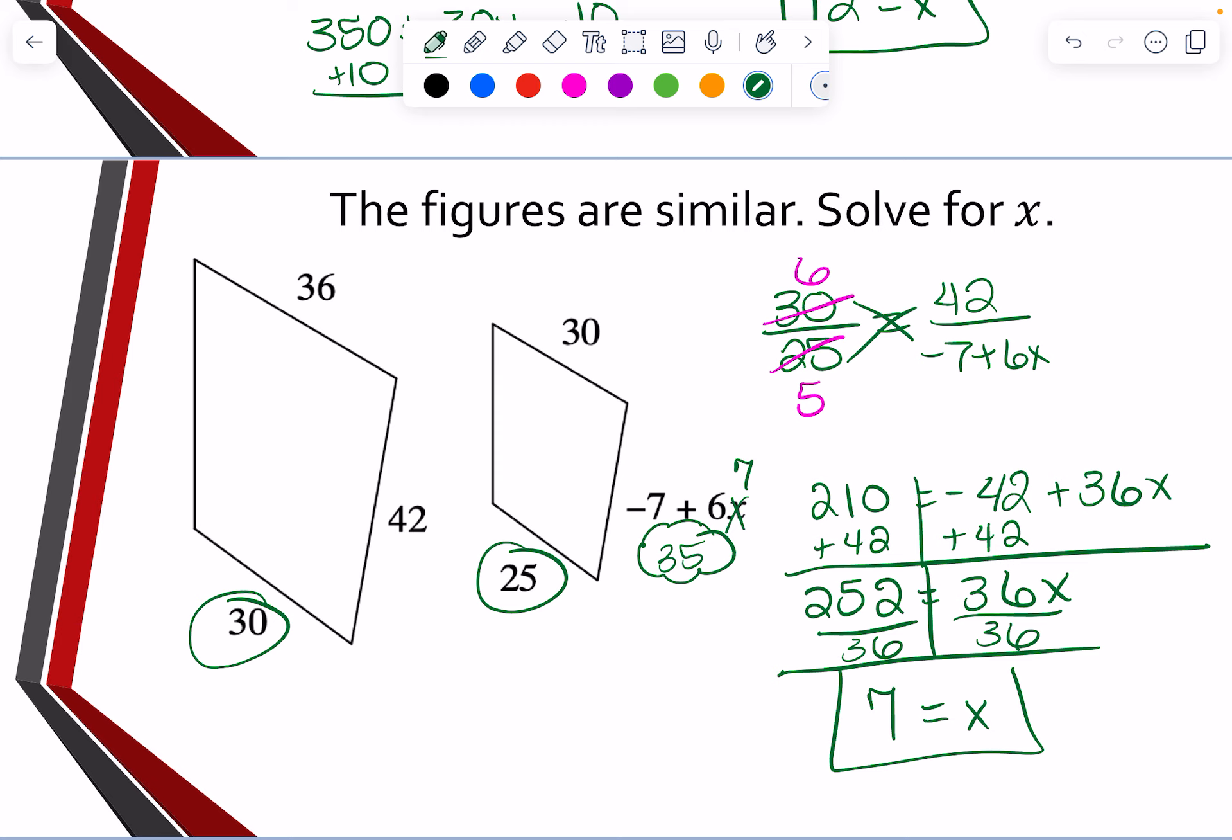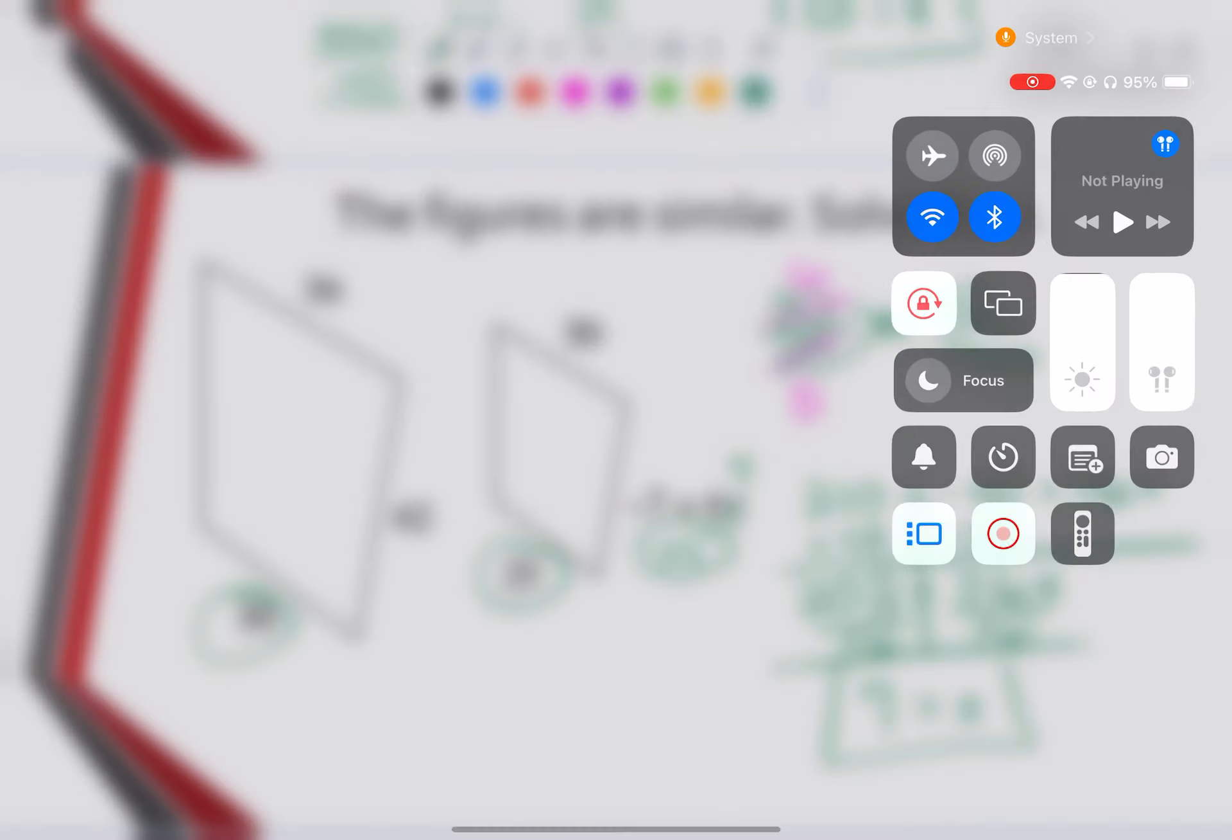And that is how we use scale factors to talk about similarity, how to prove things are similar, and find missing side lengths.